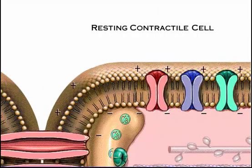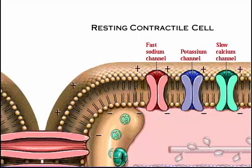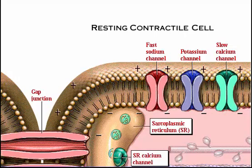Now our story moves on to the cardiac contractile cell. This cell relies on the auto-rhythmic cell to generate an action potential and pass the impulse down the line before the cell can contract. Like the auto-rhythmic cell, it has protein transport channels, but they are slightly different. Gap junctions link auto-rhythmic and contractile cells and link contractile cells with each other. Notice the sarcoplasmic reticulum, or SR, which is a storage site for calcium. Channels within the SR membrane allow calcium ions to be released into the cell. The myofilaments are the contractile units of the cardiac muscle cell.